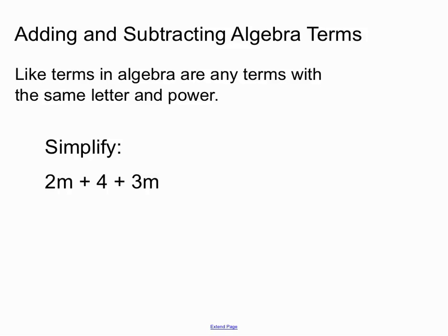So let's have a look at an example. We have simplify 2m plus 4 plus 3m, and if you look there we have 2m terms and they are considered to be like terms, so we're allowed to add or subtract those.